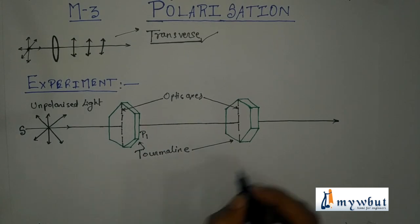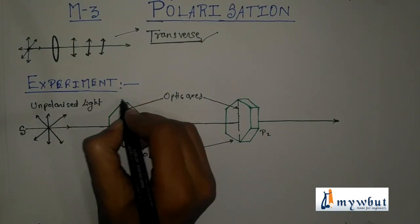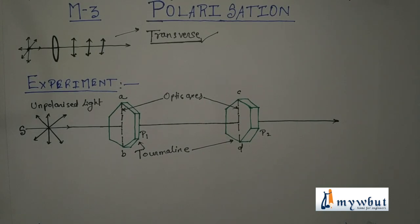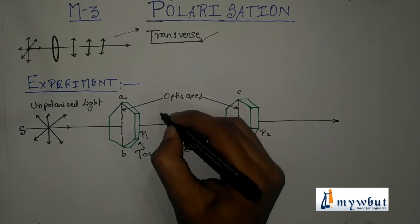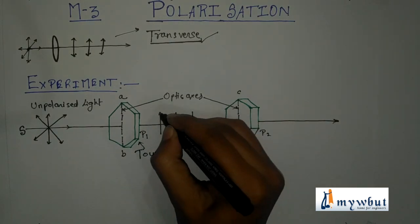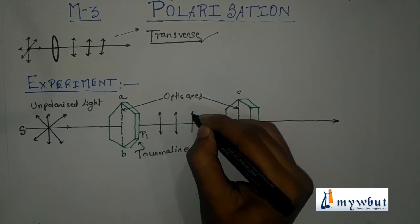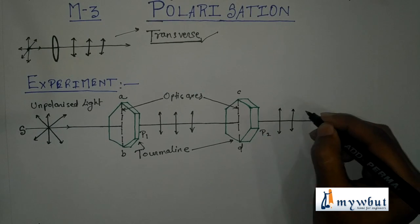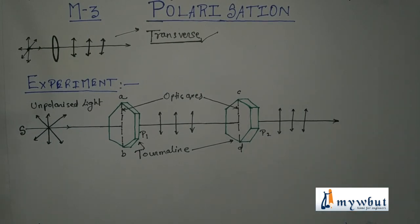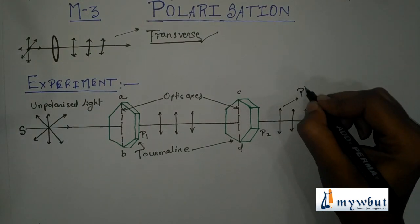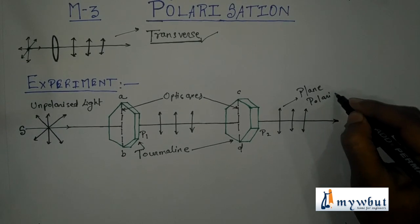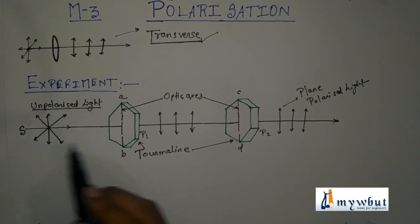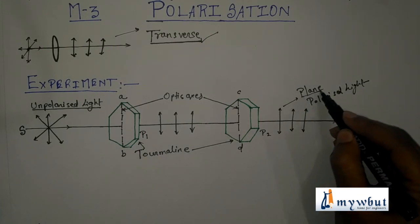Let P1 be polarizer 1 with axis AB, and P2 be polarizer 2 with axis CD. We can observe that after passing through P1, the light vibrates only in one direction. Similarly, after P2, light also vibrates in only one direction. This phenomenon is known as polarization. The lights coming out are plane polarized light, whereas the incident light was unpolarized.